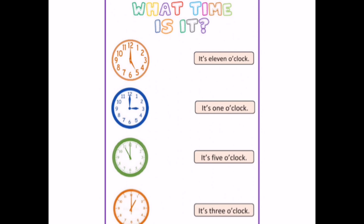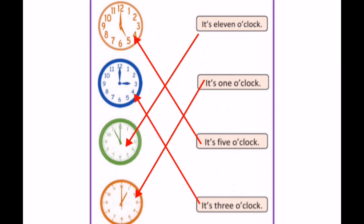Next exercise: What time is it? It's 11 o'clock — we're going to match it with the green clock. It's 1 o'clock — we match it with the brown clock. It's 5 o'clock — we match it with the orange clock. And the last one: it's 3 o'clock with the blue one.